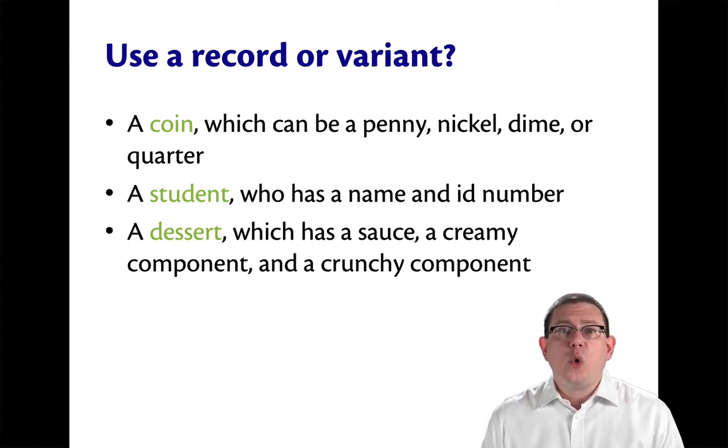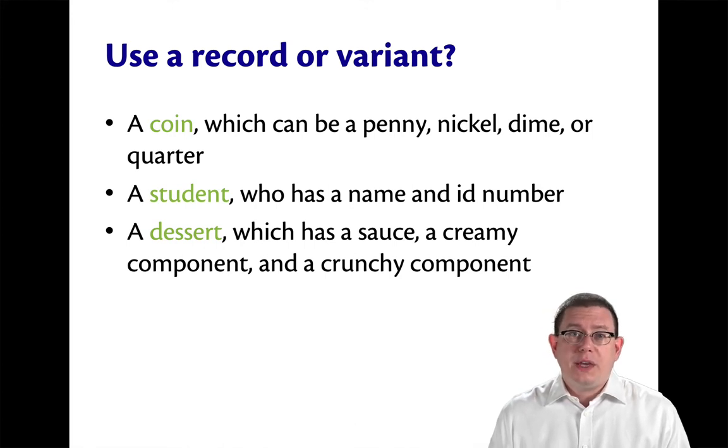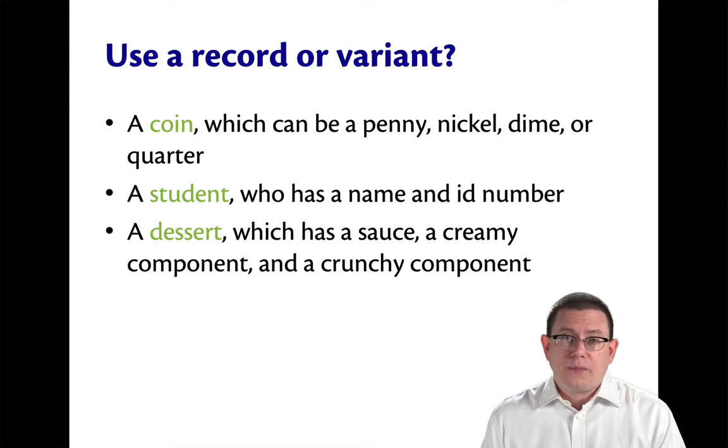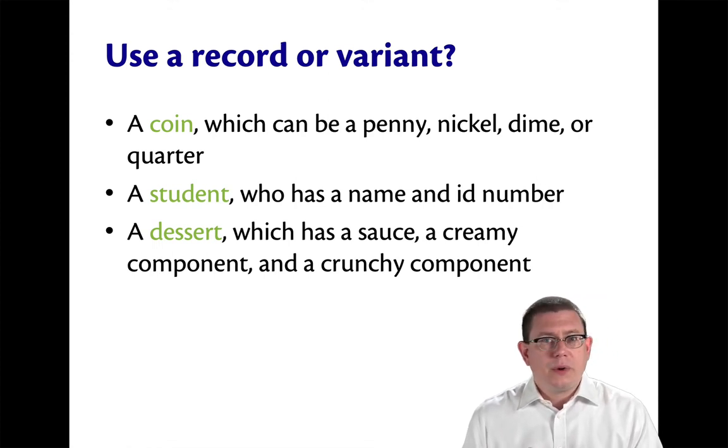Suppose you wanted to model coins, and furthermore, that coins could be, as in American currency, penny, nickel, dime, or quarter. So what would make more sense for that? A record or a variant?